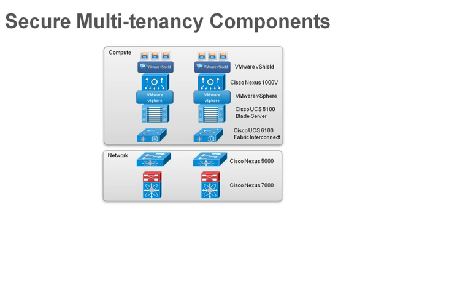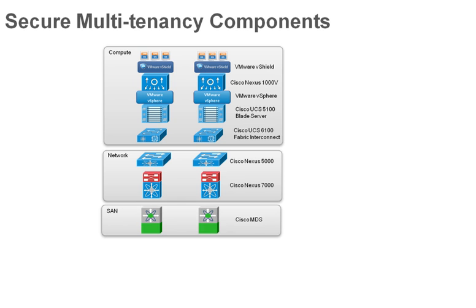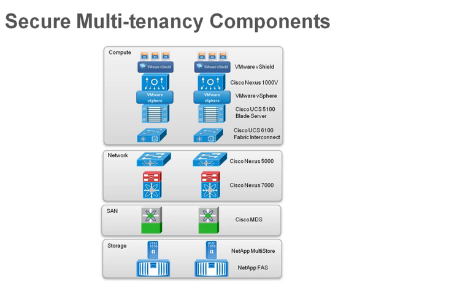The Ethernet layer is comprised of Cisco Nexus 5000 series switches for interconnectivity, and Nexus 7000s for uplink and layer 3 routing. The fiber channel fabric is connected via Cisco MDS fiber channel switches. For storage, we leverage NetApp FAS-series storage controllers, which are virtualized using the NetApp multi-store technology.